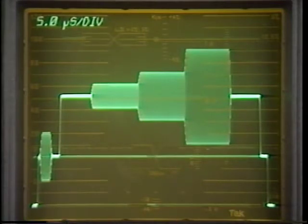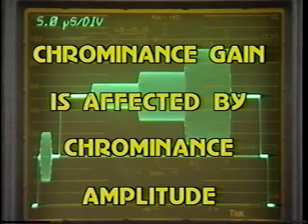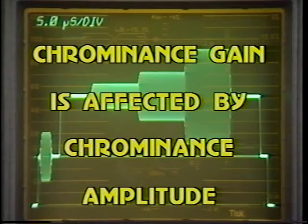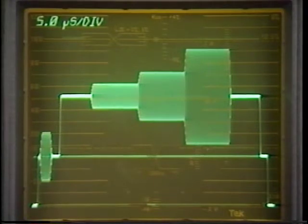The second distortion is chrominance nonlinear gain, which is present whenever chrominance gain is affected by chrominance amplitude. In other words, the proportionality between the input chrominance amplitude and the output chrominance amplitude does not remain constant as the input amplitude is varied. If the chrominance packets in the modulated pedestal signal vary from their nominal values by different amounts at the output of the system, this distortion is present. For example, if the 20 IRE packet is exactly 20 IRE at the output but the 40 IRE packet is 10% high, there is chrominance nonlinear gain in the system.